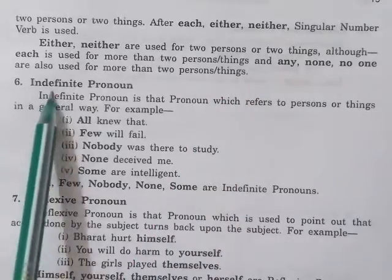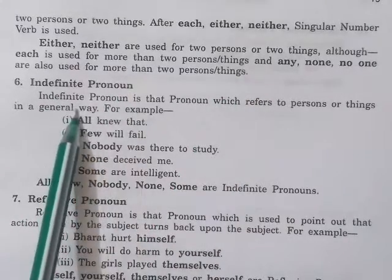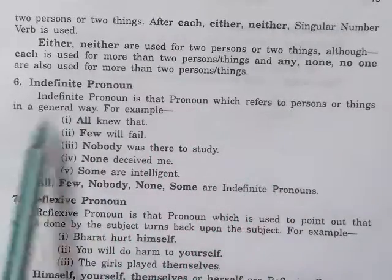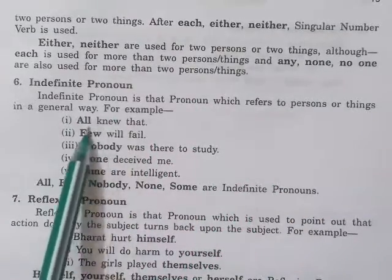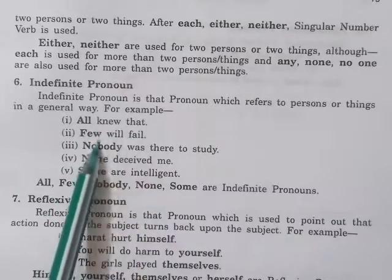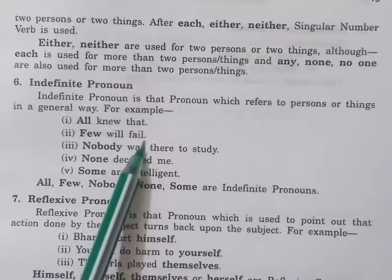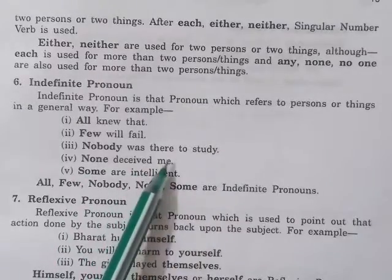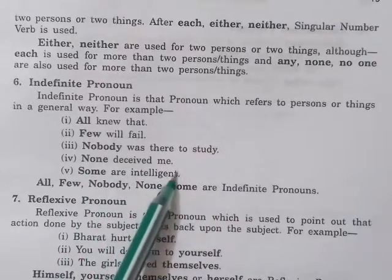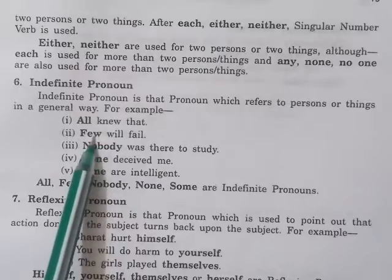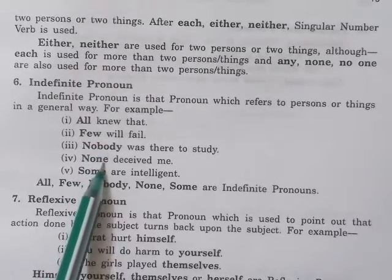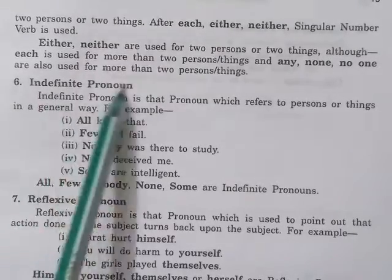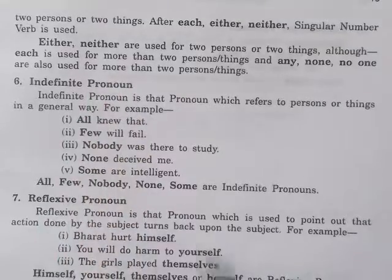The sixth one is indefinite pronoun. Indefinite pronoun is that pronoun which refers to persons or things in a general way. For example: all knew that, few will fail, nobody was there to study, none deceived me, some are intelligent. All, few, nobody, none, some are indefinite pronouns.